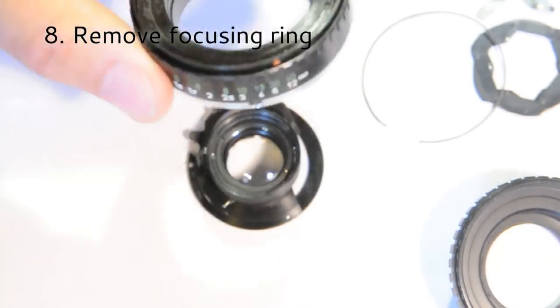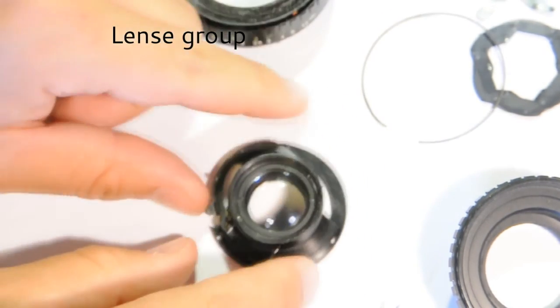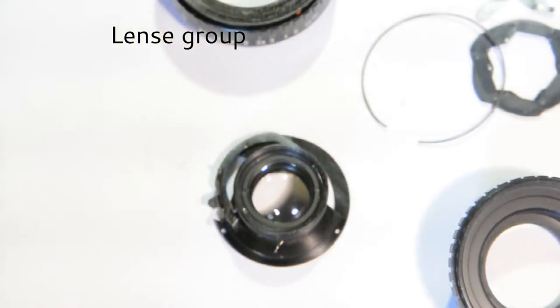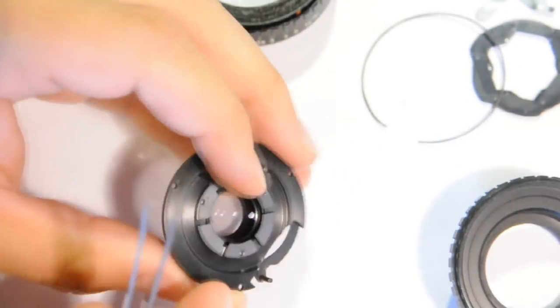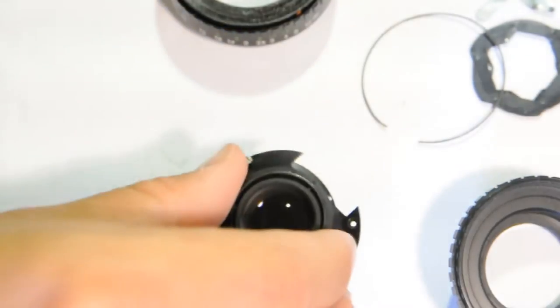And here, you can remove the focusing system. This leaves us two parts. The outer lens, and this is the inner lens. And then there is the rear lens here.